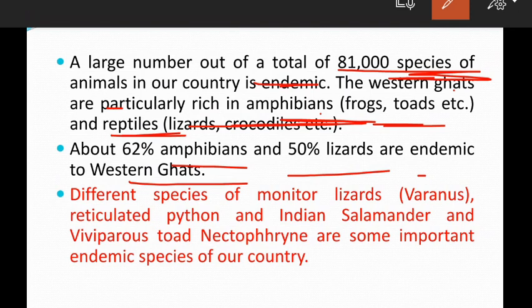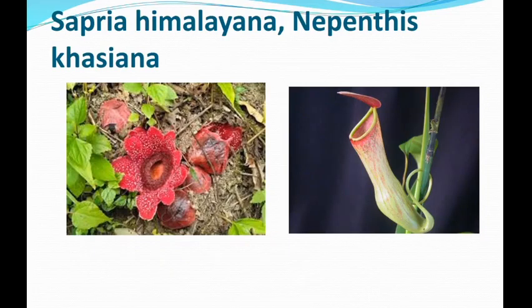Different species of monitor lizards, large numbers of reticulated python, Indian Salamander, Uviparas Toad, and Nectophryne are some important endemic species of the country. These lizards, python, and Indian Salamander are different species restricted to our country.